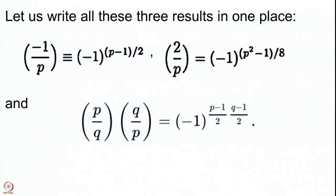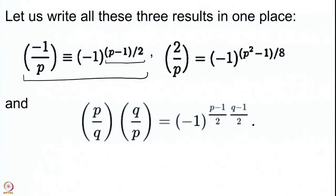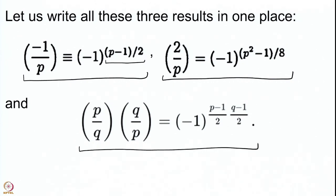So when you counted the lattice points up to parity, the total count in the whole region — which is (p−1)/2 · (q−1)/2 — turned out to be the same as the count in the two middle regions, which gave the product of the Legendre symbols. This is the third and main part of the quadratic reciprocity law. There are 3 parts — let me recall all 3 for you at once. The first tells you how to compute the Legendre symbol for −1, using Euler's criterion, from which you can easily determine when −1 is a square mod p and when it is not.